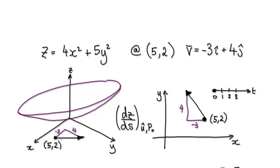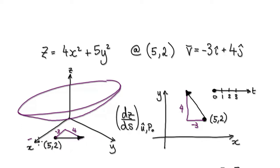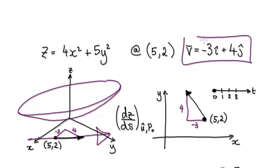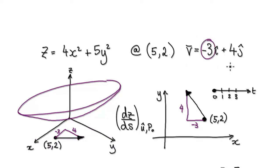At point (5, 2), when it comes to the directional derivative, we can work out the derivative in any given direction. But for our particular case, we want it in this particular direction — where it's minus 3 and then 4 up.